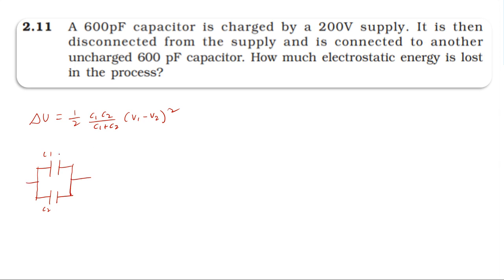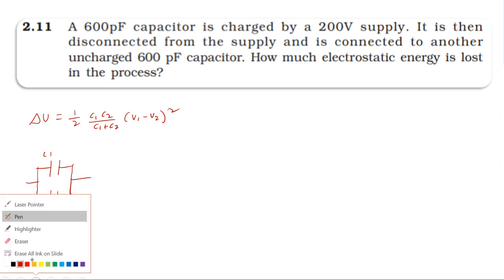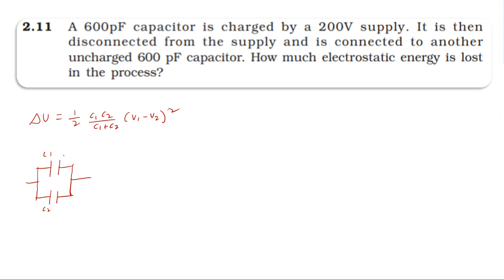Applying the formula: the first capacitor is charged to 200 volts, the second capacitor is uncharged, so V2 equals 0. Since C1 and C2 are identical and equal, the formula simplifies: half into C1·C2 divided by (C1 plus C2) becomes C over 2, with C1 and C2 cancelling, and (V1 minus V2) whole square becomes V1 squared.